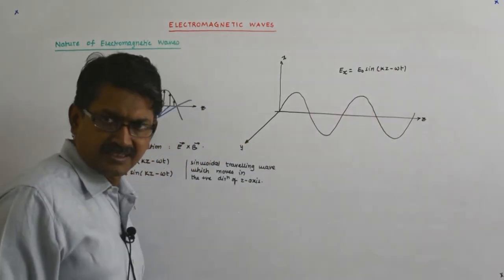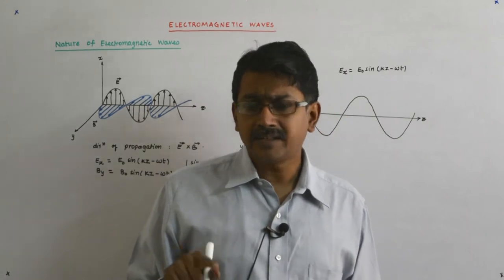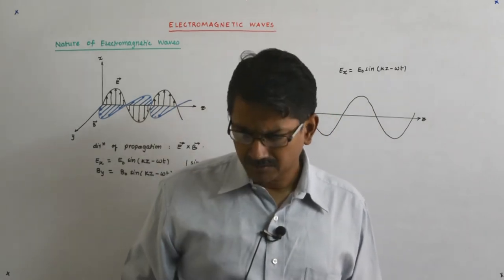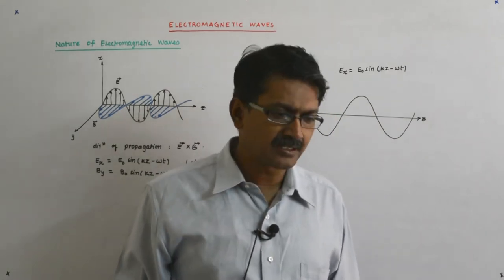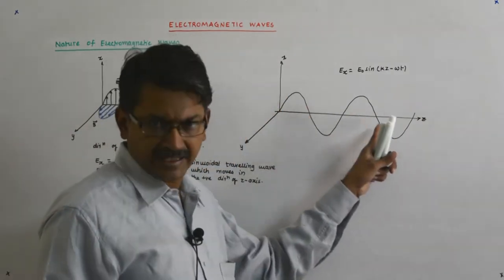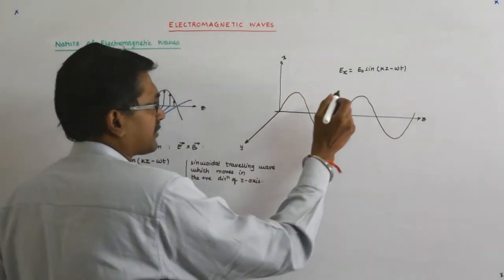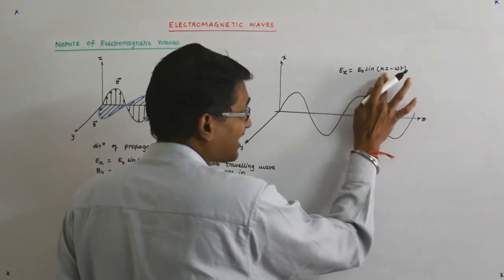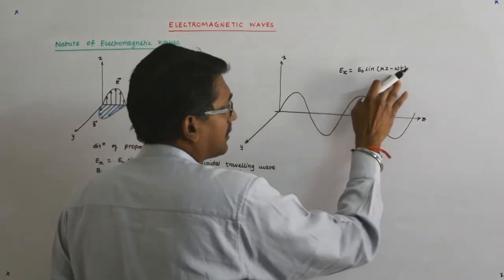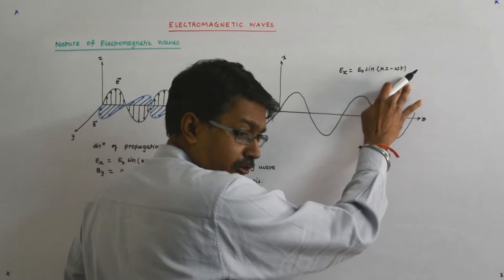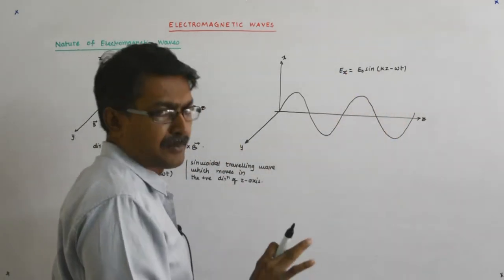This has got two variables — z is variable and t is variable. Both the time and the space are changing. So this is dependent on two variables: I can change z, I can change t also. Now let us try to analyze what is happening here.